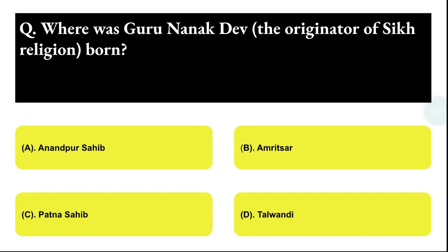Next question: where was Guru Nanak Dev, the originator of the Sikh religion, born? Option A: Anandpur Sahib, Option B: Amritsar, Option C: Patna Sahib, Option D: Talwandi. The correct answer is option D, that is Talwandi.